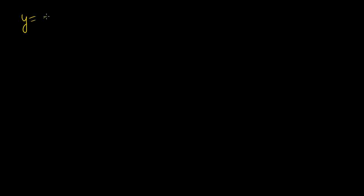A classic implicit differentiation problem is y = x to the x, and we want to find the derivative of y with respect to x. People look at that and realize there's no constant exponent, so you can't just use the power rule. How do you do it?